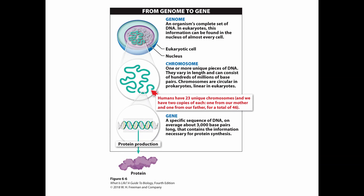In humans, we have 23 unique chromosomes, and we have two copies of each, so we have a total of 46. You get one copy of those 23 from your mom, and you get your second copy of those 23 from your dad.